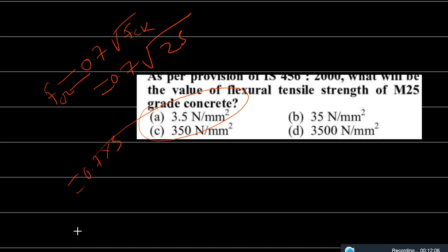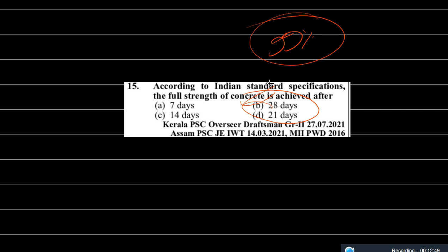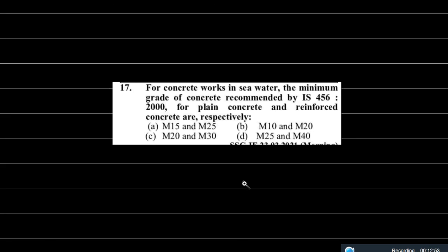The next question: according to Indian specifications, the full strength of concrete is achieved after how many days? The options are 7 days, 14 days, 21 days, or 28 days. As per Indian specifications (IS code), concrete gains approximately 99% of its standard strength at 28 days. So the correct answer is 28 days.